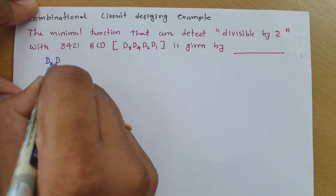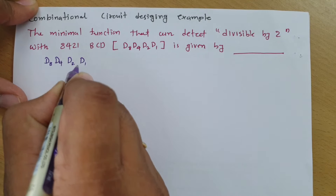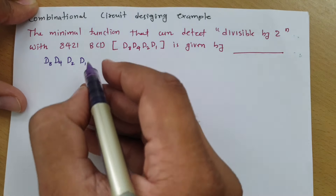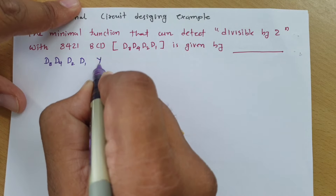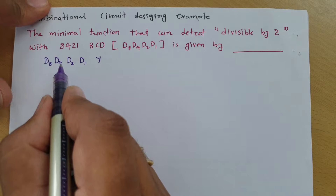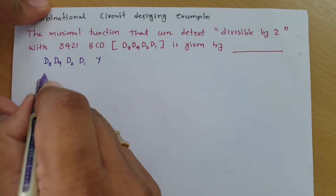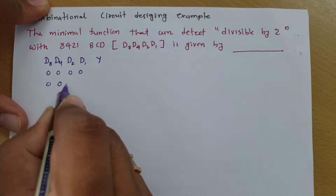The 8421 BCD code uses columns d8, d4, d2, and d1. Let us say we have a function which is y. The BCD code starts from 0000 and goes up to 0001. In BCD code, you will have digits 0 to 9 only.